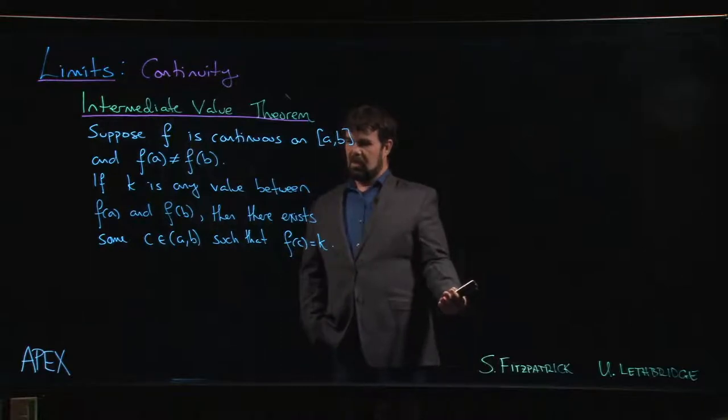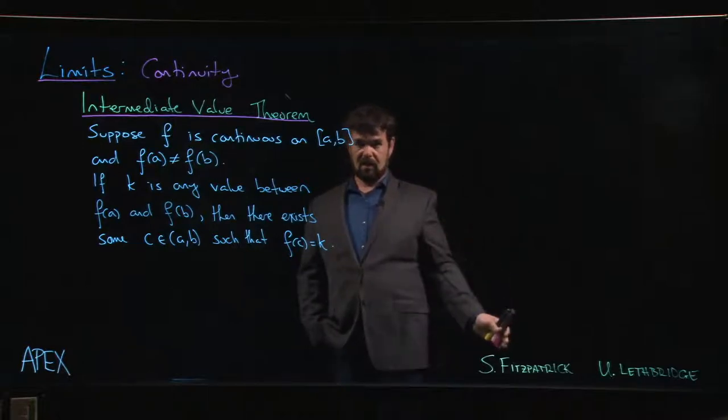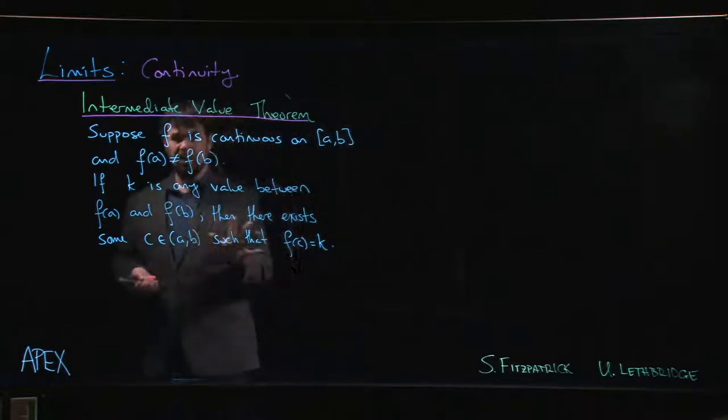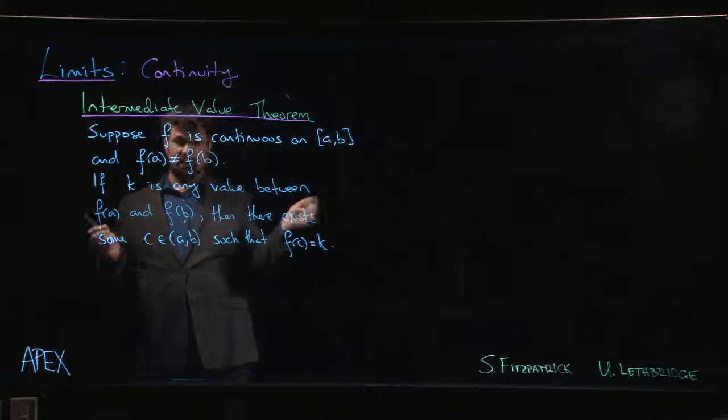The Intermediate Value Theorem is interesting in that in some sense it will tell us that there is an answer but it won't tell us what the answer is. So what the Intermediate Value Theorem says is: suppose you've got a continuous function, continuous on some interval, and you've got different values for the function at the two endpoints.